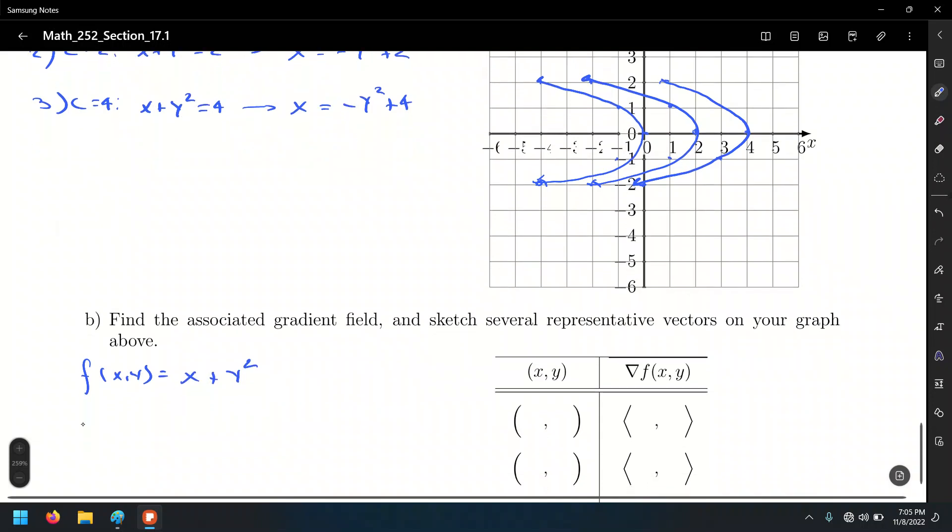and find nabla of f. So that's the gradient. And again, recall that the gradient of f is the partial derivative with respect to x, which is 1, comma, the partial derivative with respect to y, which is 2y.